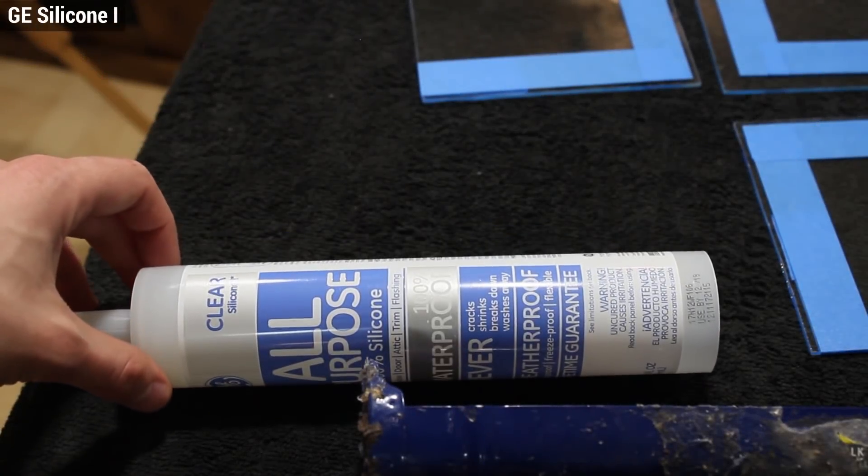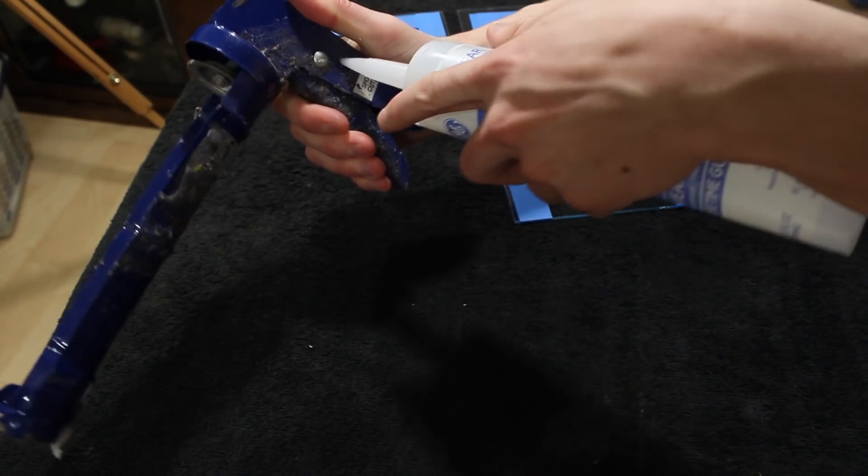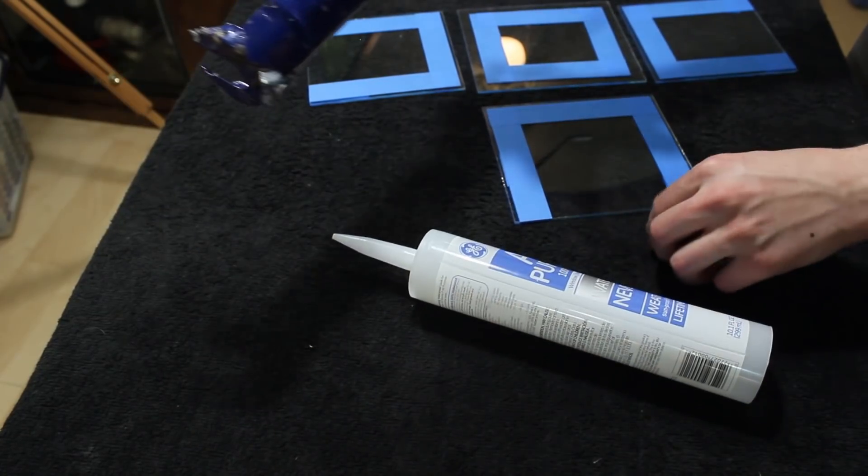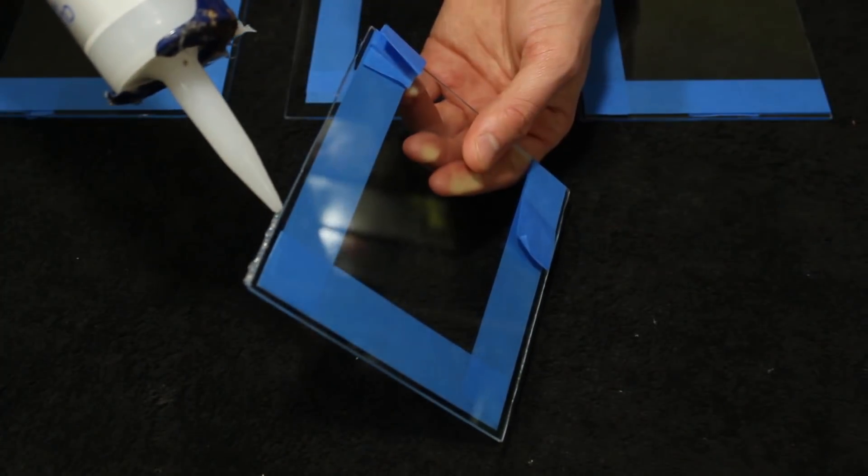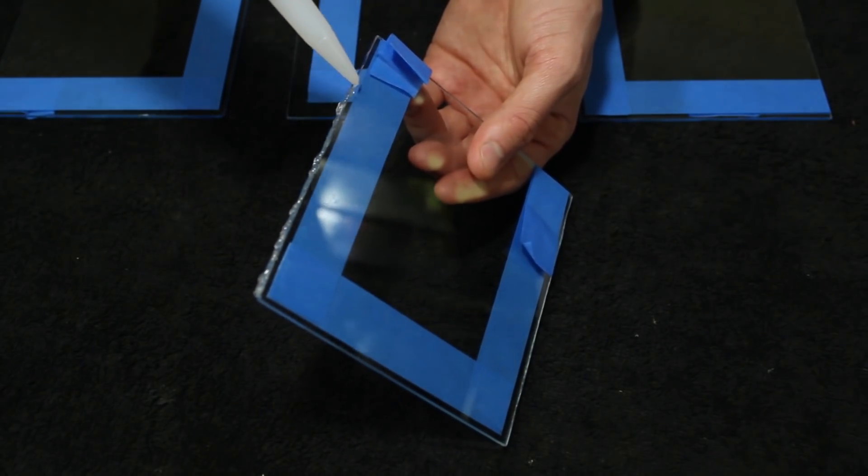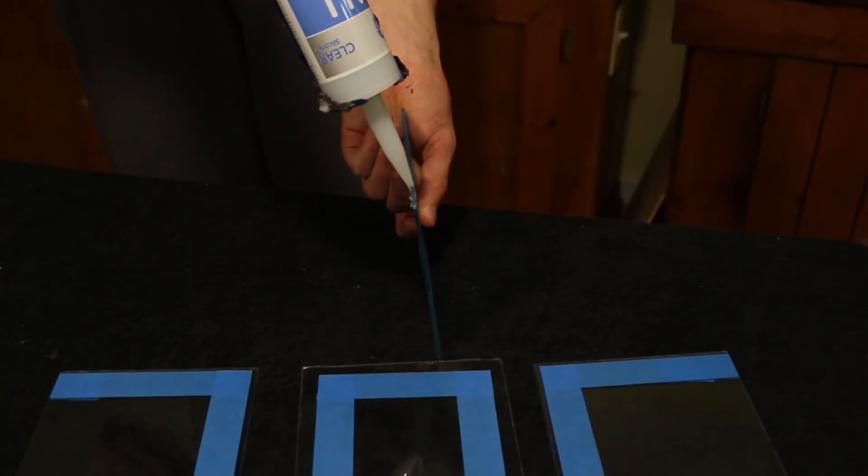From there I got a tube of GE silicone 1. This is 100% pure silicone with no additives. It's completely safe to use for aquariums, making it a great DIY alternative to what's typically sold as aquarium grade silicone. I prepped the silicone for use and then applied it to the outside edges of two panes of glass. These will be the interior panes or the front and back of the aquarium.